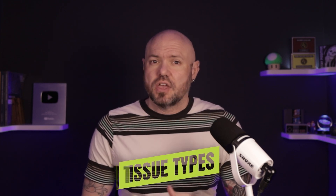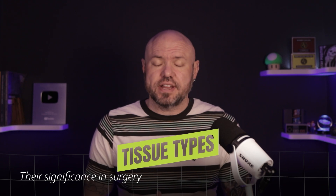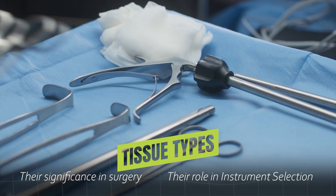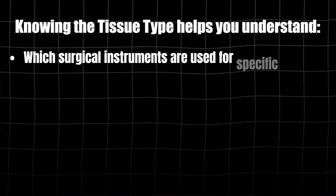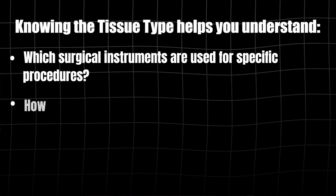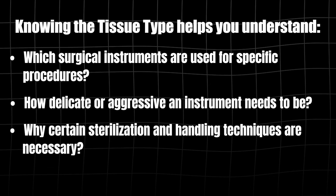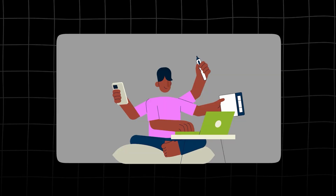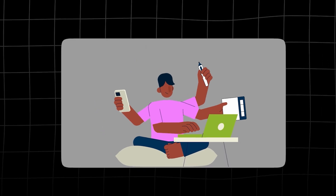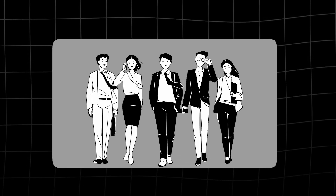Today we're going to talk about something every sterile processing technician needs to understand: the different tissue types. We'll also discuss their significance in surgery and how tissue types play a role in instrument selection. Knowing the different types of tissue helps you understand which surgical instruments are used for specific procedures, how delicate or aggressive an instrument needs to be, and why certain sterilization and handling techniques are so necessary.